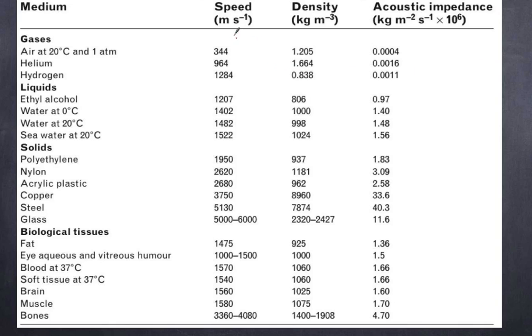Here we have speed or velocity and density, and we multiply those two together. The units are listed, but we often refer acoustic impedance to a power of 10 to the 6th. The unit is kilograms per meter squared per second times 10 to the power of 6.